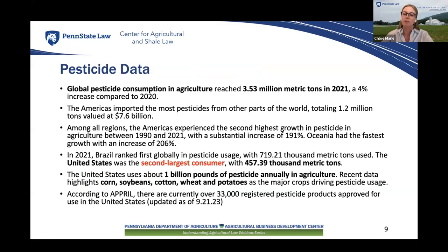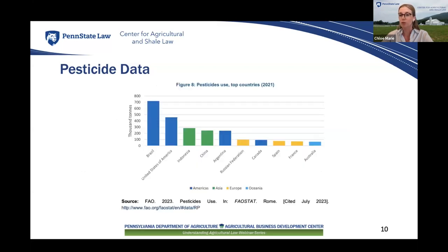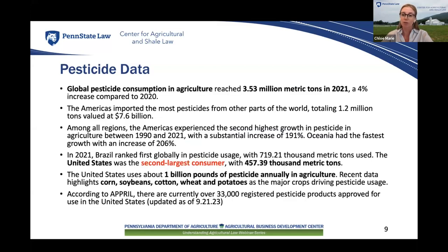Now let's explore some key facts and figures about pesticide use in agriculture. According to the Food and Agriculture Organization of the United Nations, in 2021, global pesticide consumption in agriculture reached 3.53 million metric tons, showing a 4% increase compared to 2020. Brazil was the world's largest pesticide user in 2021 with approximately 720,000 metric tons used, followed closely by the United States, which ranked second at around 457,000 metric tons.